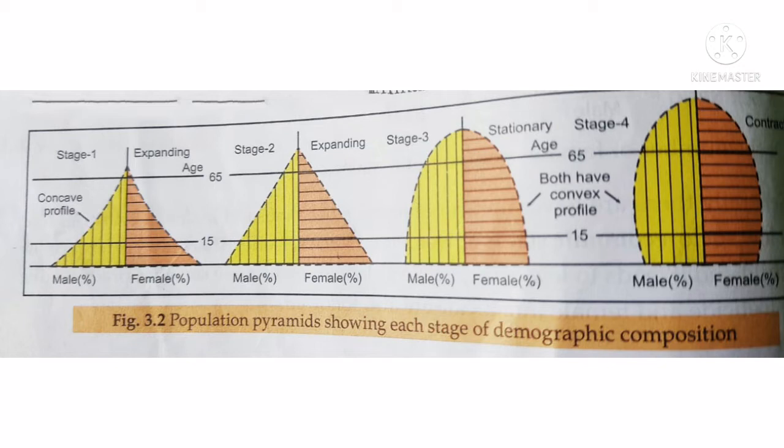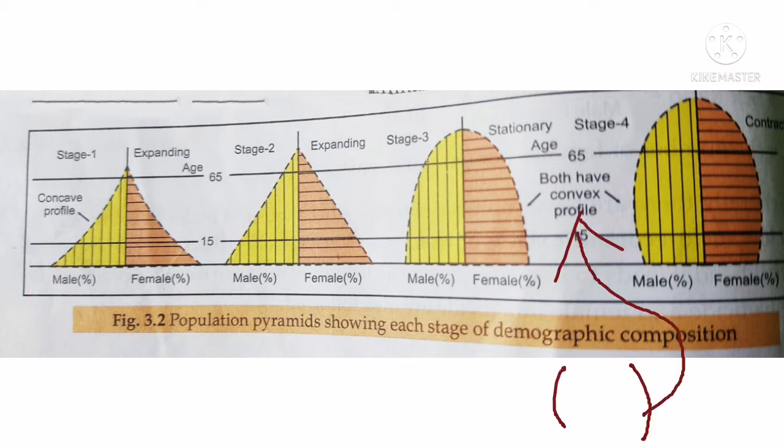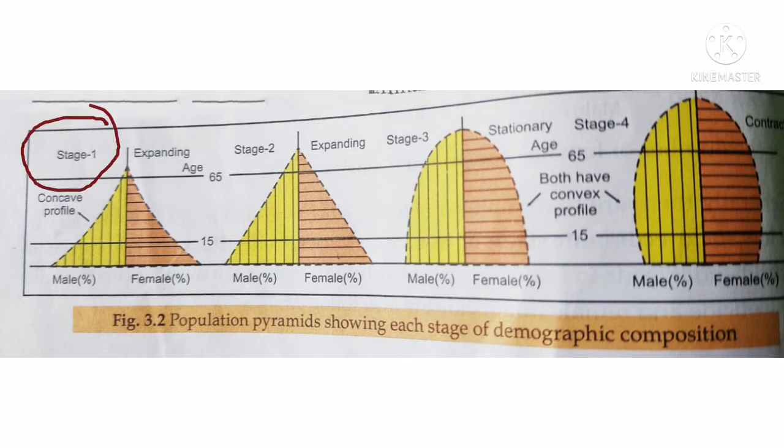In Stage 1, we find a concave shape. In Stage 4, we find a convex shape. In Stage 1, high birth and death rates result in lower life expectancy. In Stage 2, the birth rate is still high but the death rate is going down.